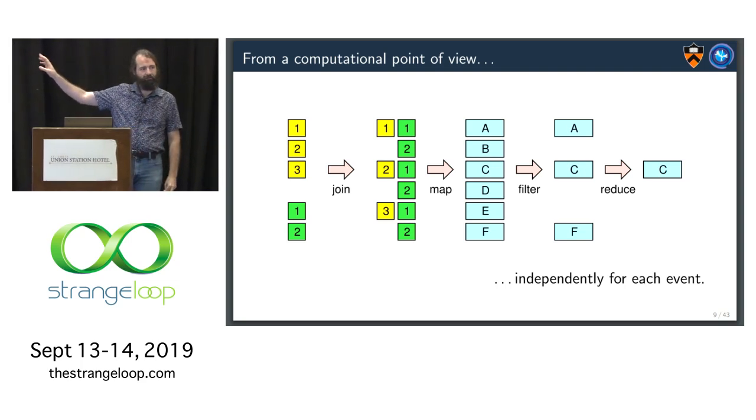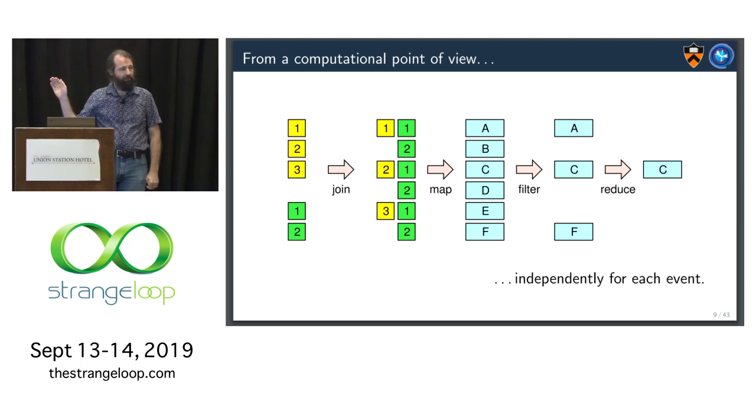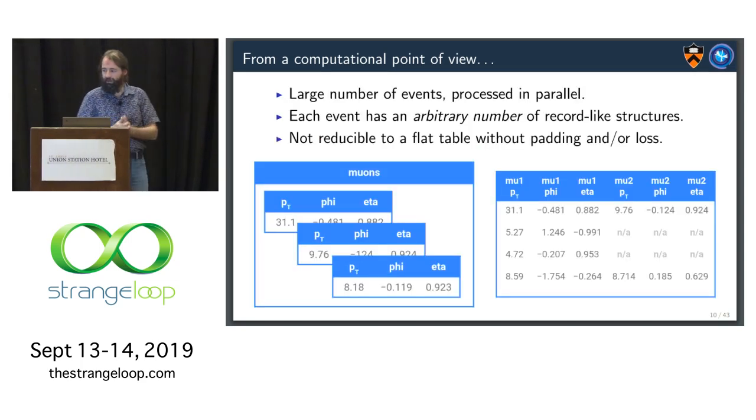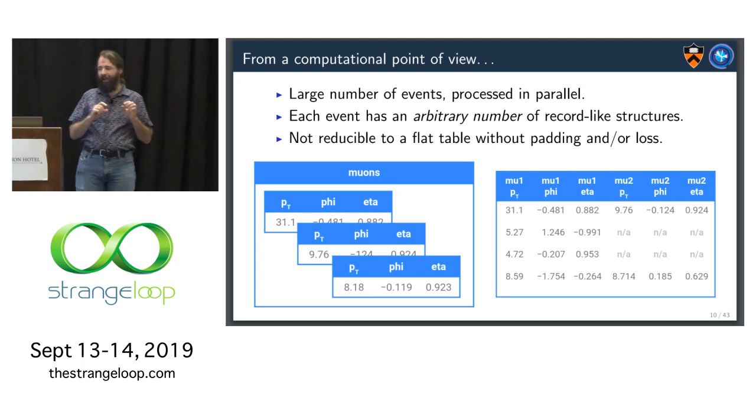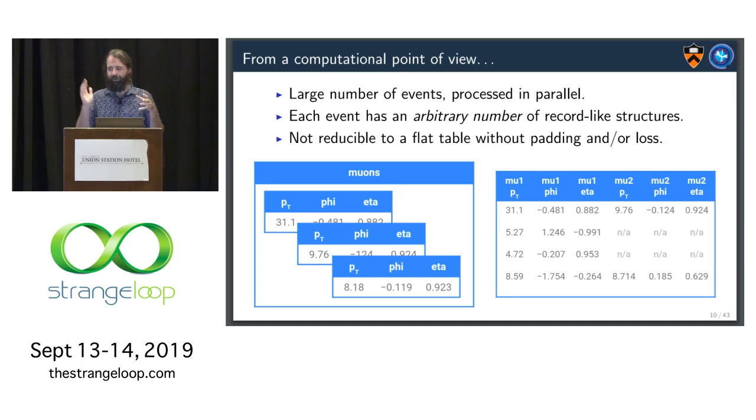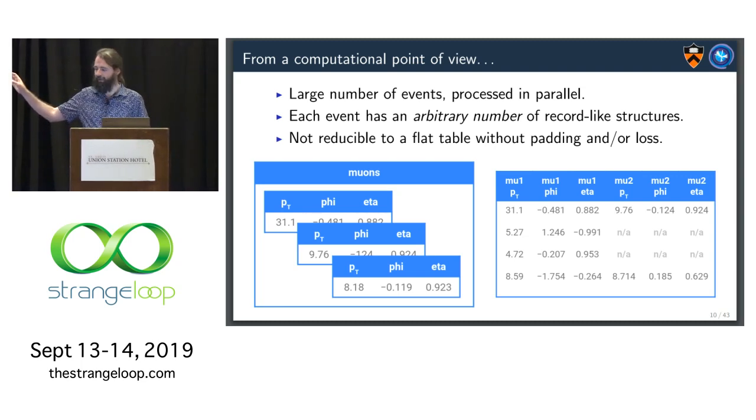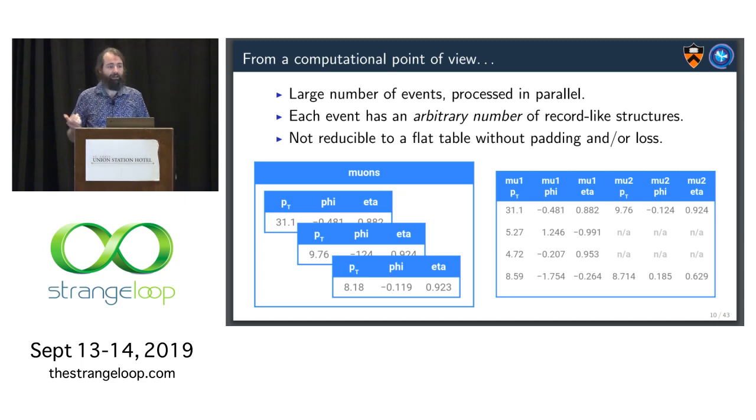So, here's sort of the diagram of how it goes. First, we'll have some sort of per event join. And then we map some calculation across all of those candidates. We filter to pick the best ones. We filter to find the okay ones. And then we reduce to find the best one, independently for each event. Another key, I can't say this enough, it's a large number of events. And then each event, within the event, has an arbitrary number of record-like structures. So, we'll have like a muon record that has values of various attributes, PT, eta, phi. And then we'll have several of them. And this is not reducible to a single flat table without some sort of padding or loss. So, if we tried to turn this into a single table, then we would have to say mu1PT, mu2PT. And if there isn't a mu2, well, then you fill it with NA. And if there is a mu3, well, you've lost it. So, we don't want to do that lossy transformation until maybe the very last stage of some particular analysis.